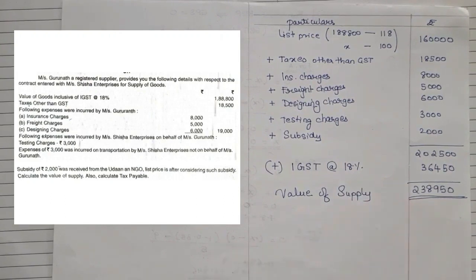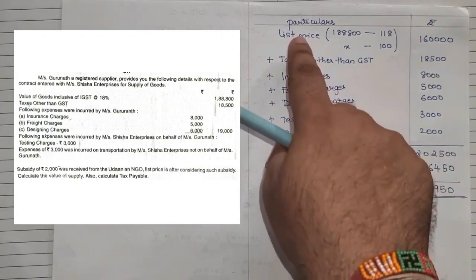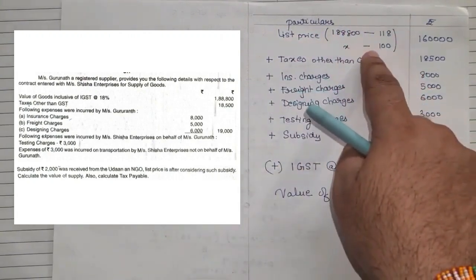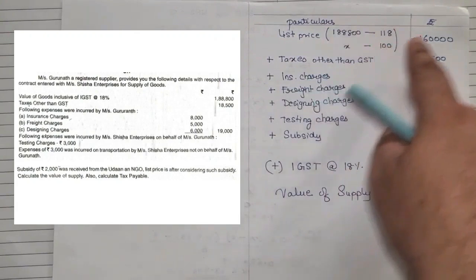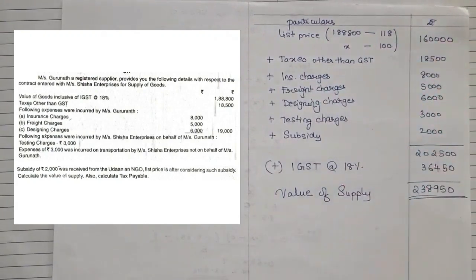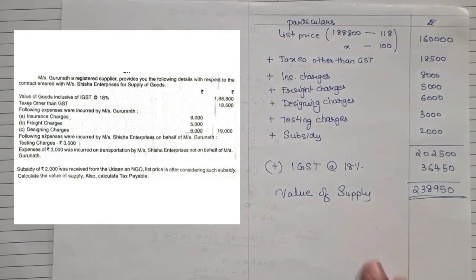So this was the very first sum, in which the list price had GST inclusive — we removed the GST using the method shown, and then followed the format. I hope everyone has understood that. Now we will pick up the second sum, also based on value of supply, but with a different twist. Let us see how to solve that particular sum.